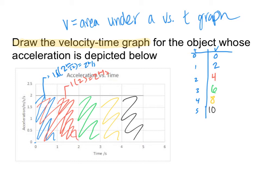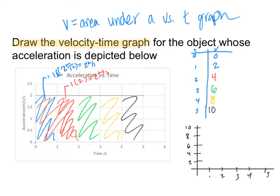Let's draw the velocity versus time graph. I'll plot each of the points: (0, 0), (1, 2), (2, 4), (3, 6), (4, 8), and (5, 10). Then I connect the dots to draw the velocity versus time graph for the object.